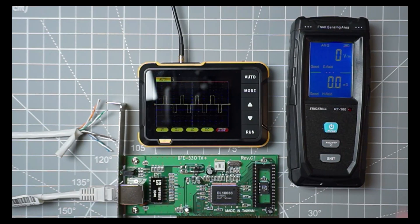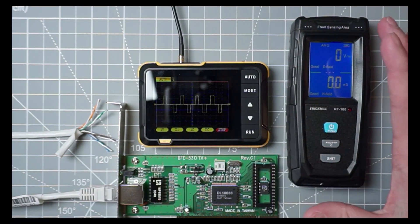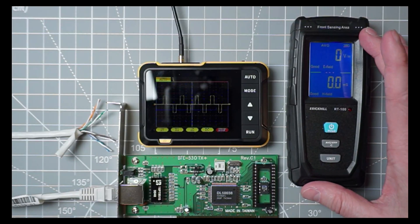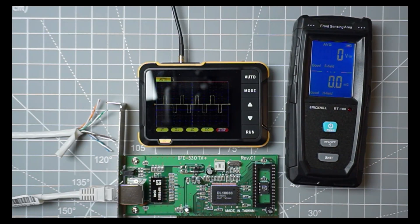To help answer the first question I'll be using a small oscilloscope and for the other two questions I'll be using a device called an electromagnetic radiation detector. But before we dive into the hardware, let's start with a little bit of theory.